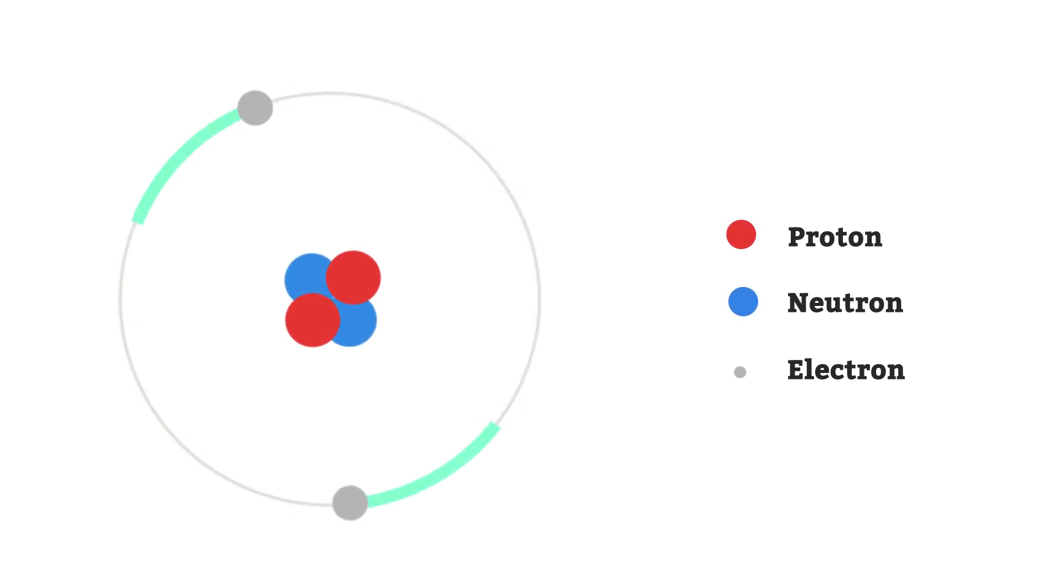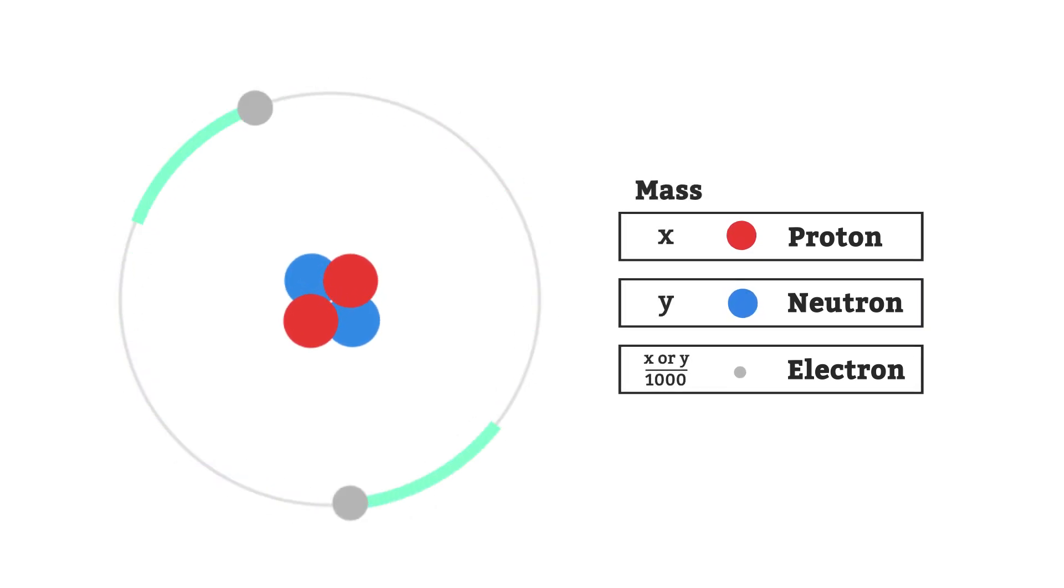The mass of an electron is about one thousandth of the mass of a neutron or proton, which means that almost all the mass of an atom is concentrated in the centre, at the nucleus.